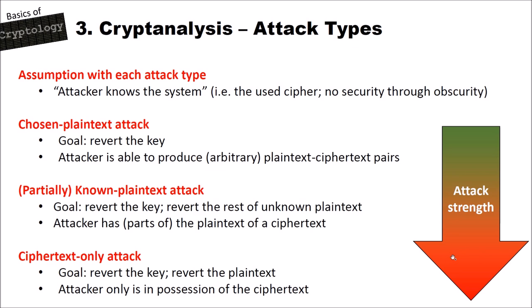The first and easiest attack is the chosen plaintext attack. The goal here is to revert the key. With this attack, the attacker is able to produce arbitrary plaintext-ciphertext pairs and use these for reverting the key.